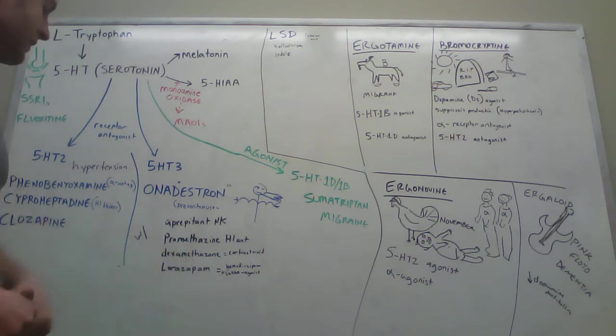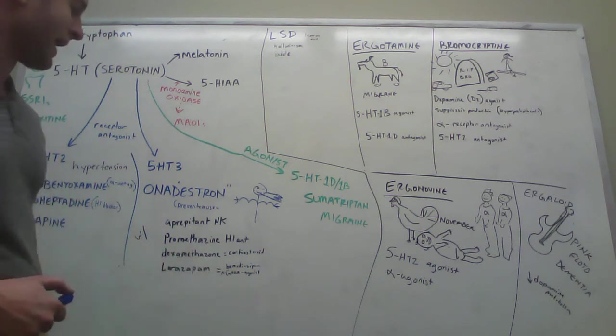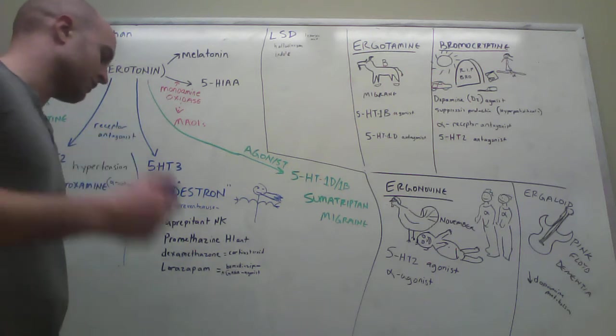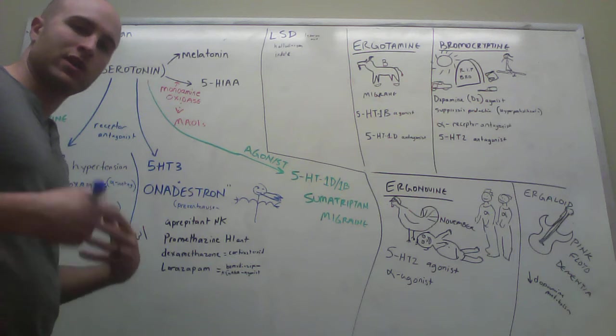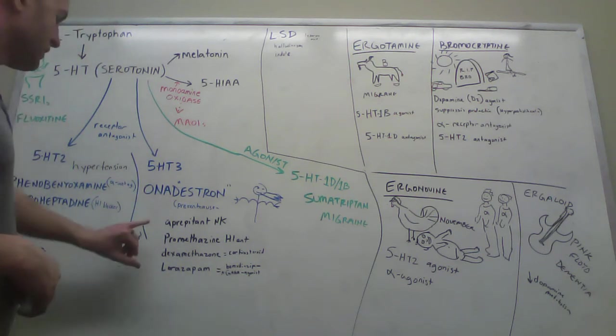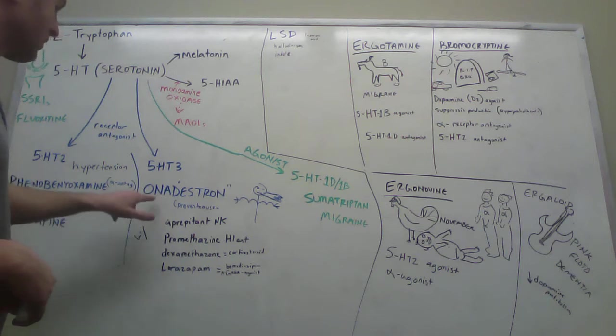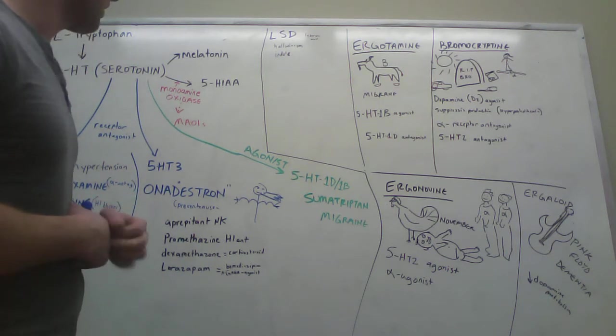Next, you have dexamethasone, which is a corticosteroid, and you have lorazepam, which is a GABA agonist, like benzodiazepine. GABA agonists open up chlorine channels. So these four drugs are taken with ondansetron to help prevent nausea.